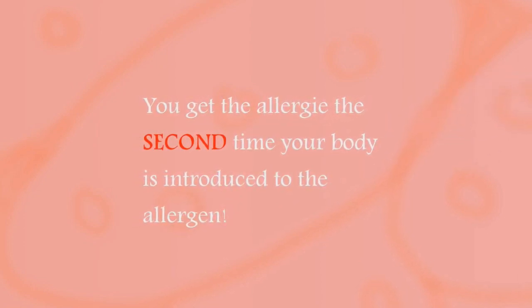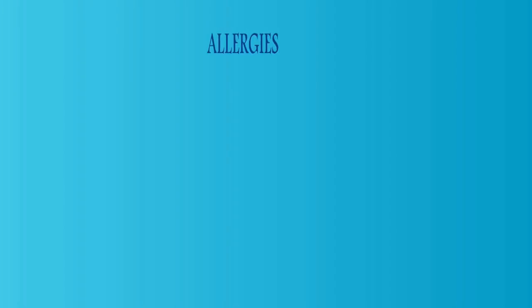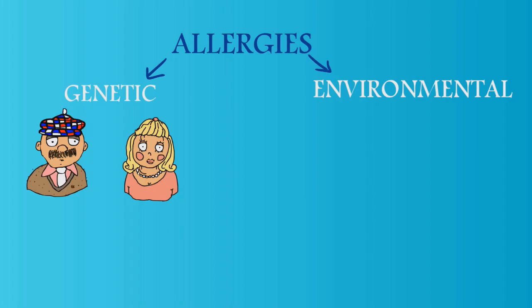So how do allergies even form? Allergies have two factors involved, or at least two main factors, genetic and environmental. If one of your parents has allergies, you're more likely to have them. If two of your parents do, even more likely.